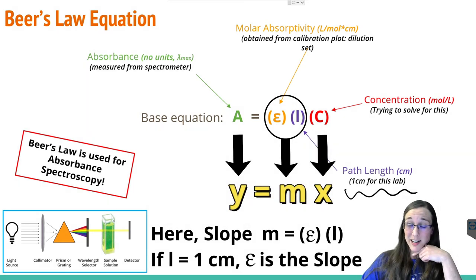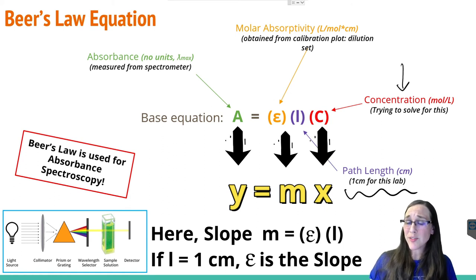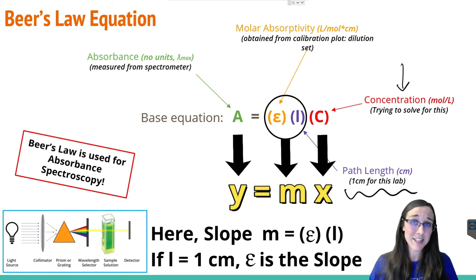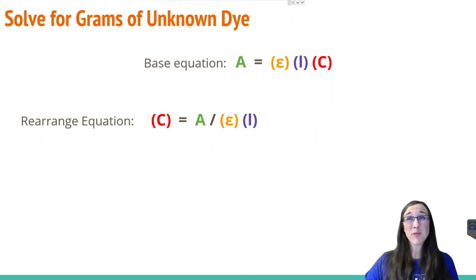Now where you're probably stuck is on this concentration part. The lab is asking you to solve for grams of the unknown chemical substance. We're going to hijack this equation to solve for that concentration in order to get to the grams. So simply by rearranging the equation to solve for C, our concentration...